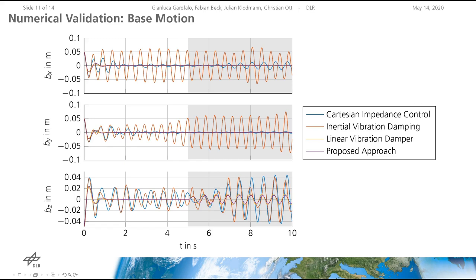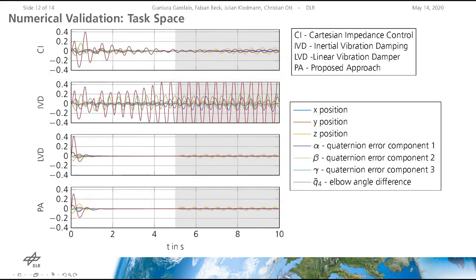Compared to the Cartesian impedance controller and the inertial vibration damping, the linear vibration damper and the proposed approach achieve better vibration damping performance. Another important difference can be observed with respect to the response to disturbance. The simulation clearly shows that for the proposed approach and the linear vibration damper, the disturbance affects only the base in the perturbed direction. The performance in task space is also evaluated for all four methods, and the linear vibration damper and the proposed approach perform much better than the Cartesian impedance controller and the inertial vibration damping in task space.